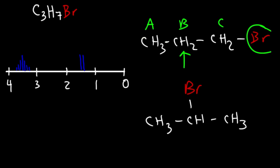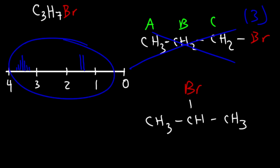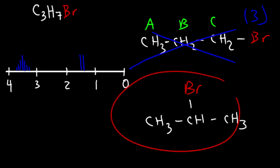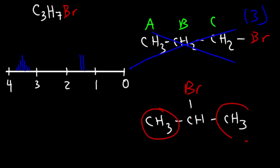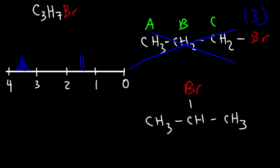So 1-bromopropane will show up as three signals, but we need only two signals, so it cannot be the correct structure. For 2-bromopropane, the two methyl groups are identical — they exist in the exact same chemical environment — so they will show up as one signal, signal A. Signal B corresponds to the CH group, which is different from the methyl groups.